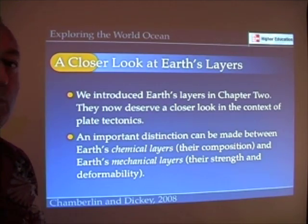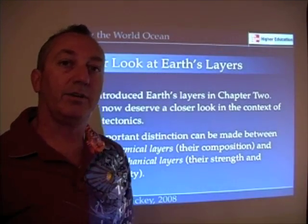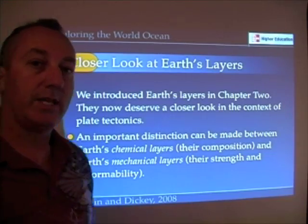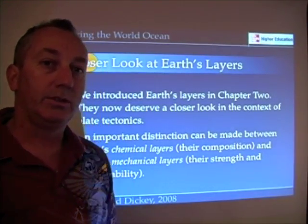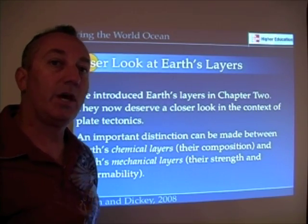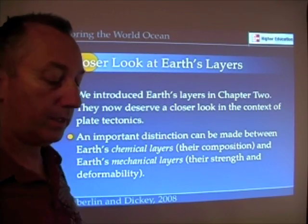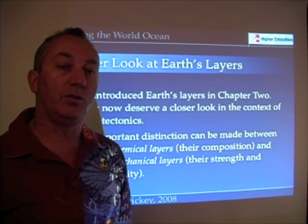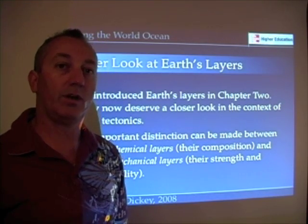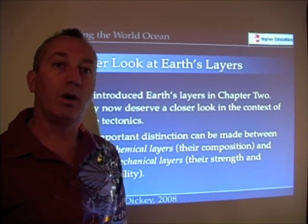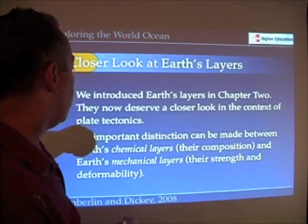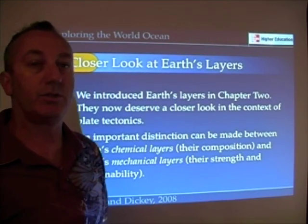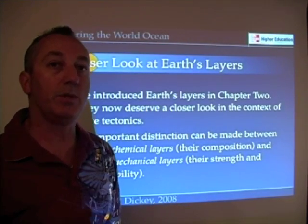Back in Chapter 2, we introduced the parts of the interior of the Earth. Earth has a crust, a mantle, and a core — which unites it with the other rocky planets. We want to make an important distinction between what are called chemical layers — the crust, mantle, and core being designations for chemical composition — and what we call mechanical layers, which are layers based on their strength and their ability to move.